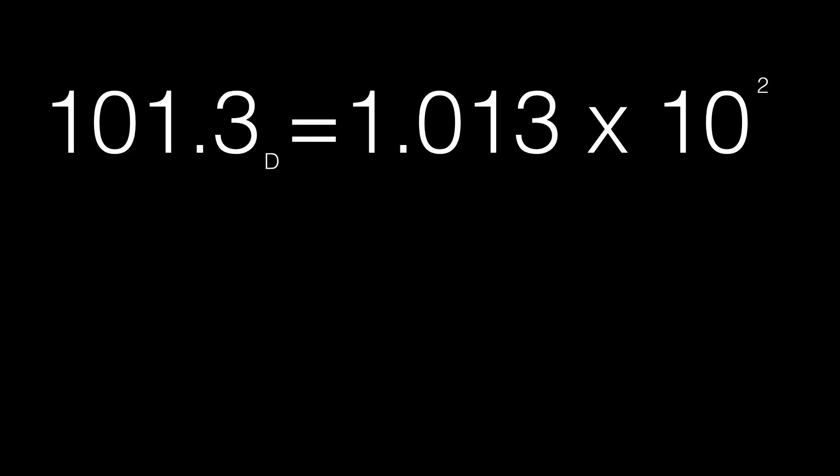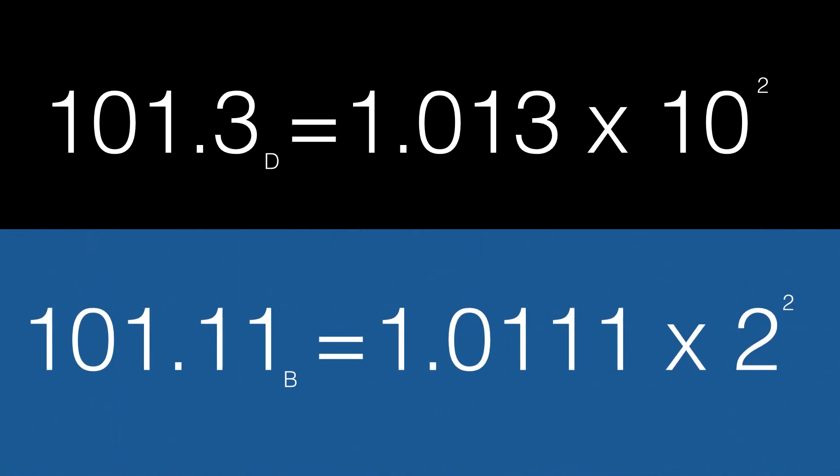If you remember scientific notation, that works too. Take the decimal number 101.3. That's 1.013 times 10 to the 2. So, if we had a binary number, 101.11, that's represented as 1.0111 times 2 to the 2nd power.